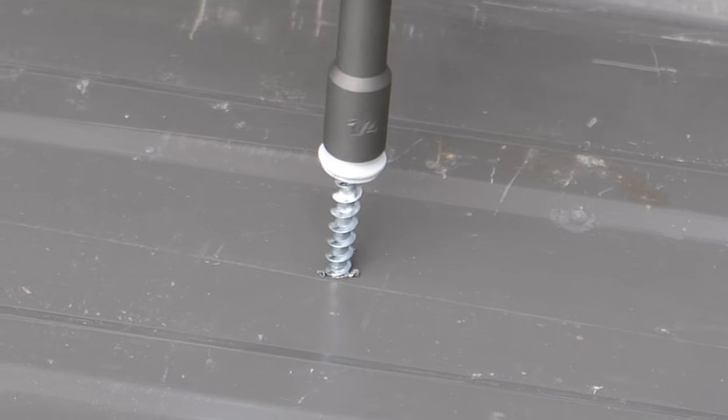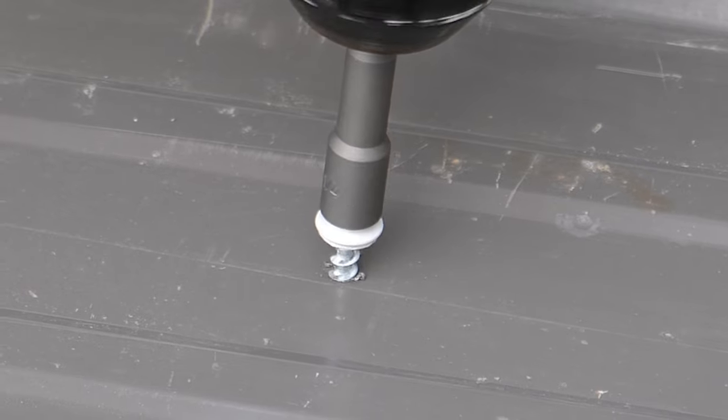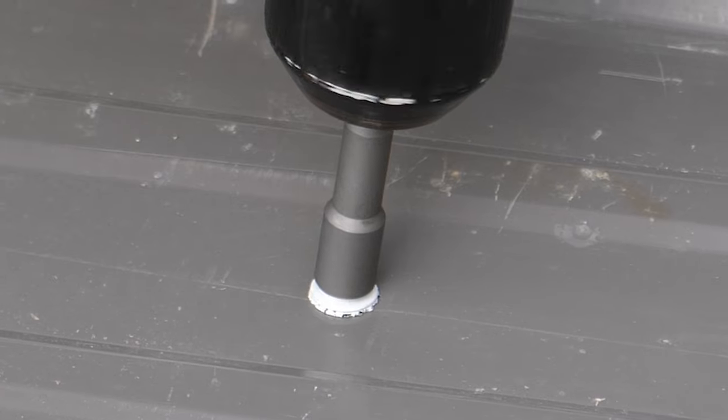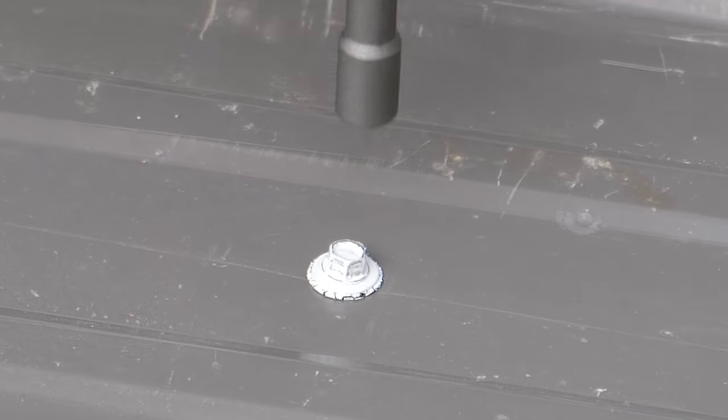Number two, tightening metal roofing screws. Over tightening the screw is the most common error made. People tend to think the tighter it is, the better. That is not the case for the design of these screws.